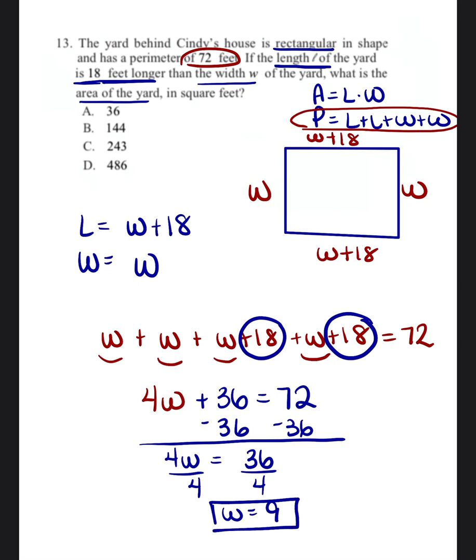So now we know that the width is equal to 9. So if the width is equal to 9, the length would be width plus 18, which would be 9 plus 18, which is equal to 27.